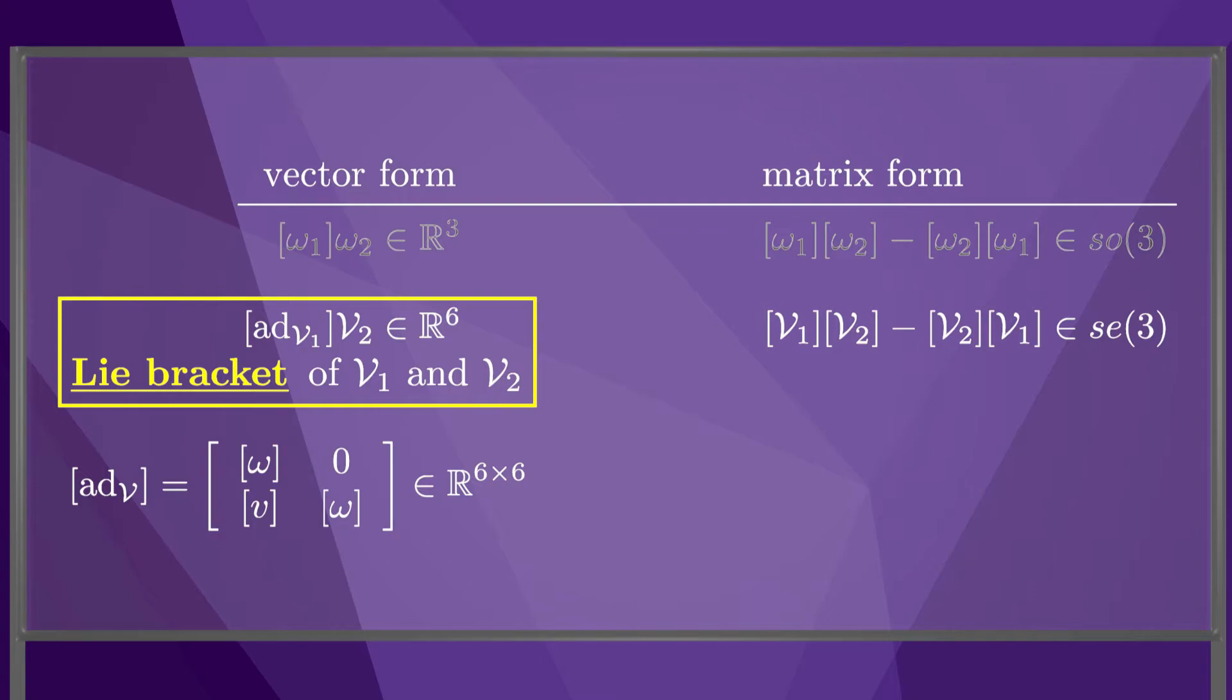The Lie bracket of V1 and V2 is an acceleration, measuring how motion along the twist V2 would change if the body follows the twist V1. The matrix form of the Lie bracket is analogous to the matrix form of the cross-product.